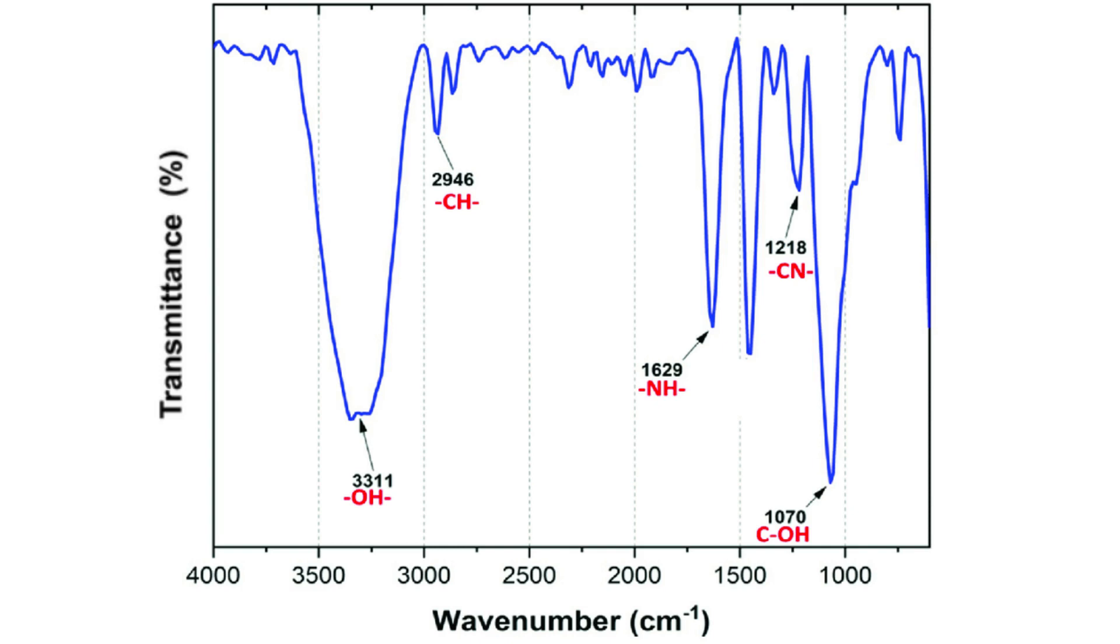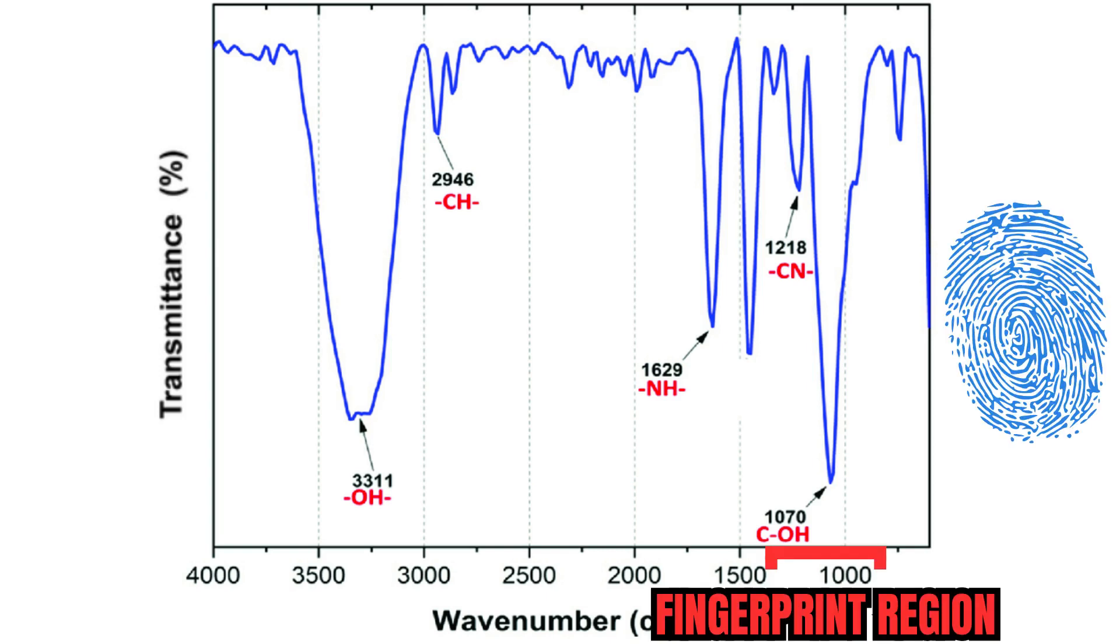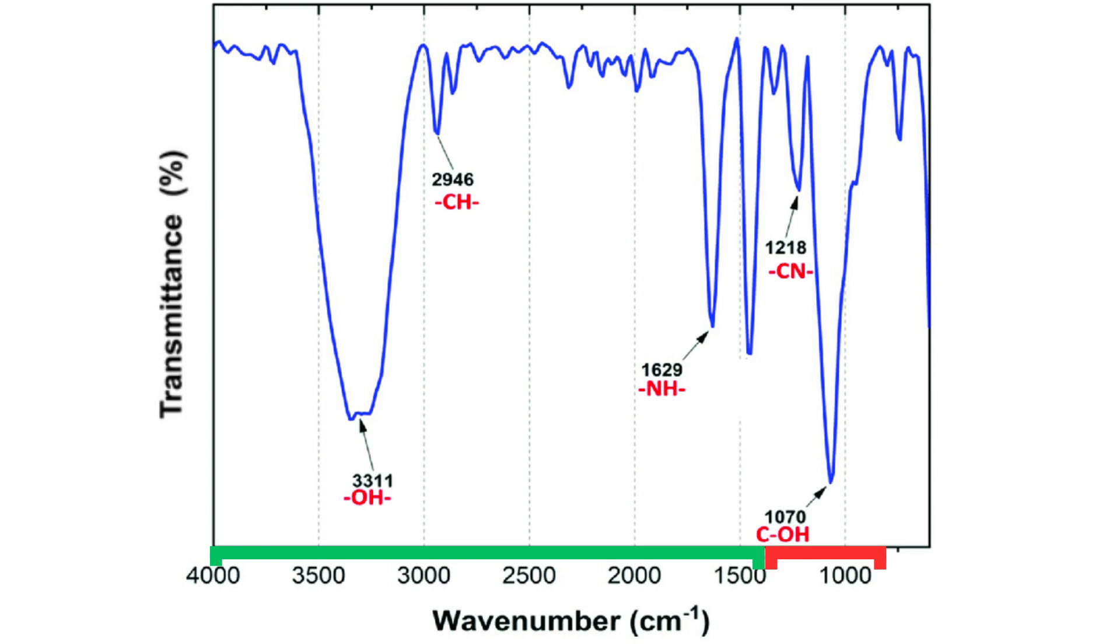The region between 600 to 1400 is called the fingerprint region and tends to be complex with multiple bands that overlap each other. Above this region is where one can manually identify the presence of most functional groups.